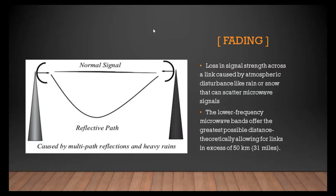Assalamualaikum warahmatullahi wabarakatuh. This is Abdel Al-Qaha, and I will talk about fading. Fading basically is a loss in signal strength across a link caused by atmospheric disturbance like rain or snow that can scatter microwave signals. The lower frequency microwave bands offer the greatest possible distance, theoretically allowing for links exceeding 50 km.